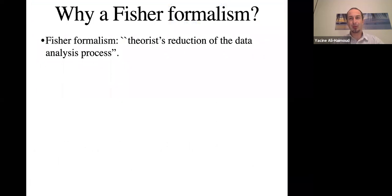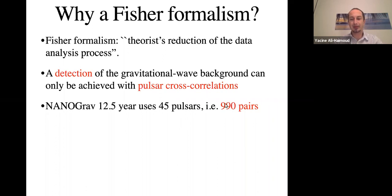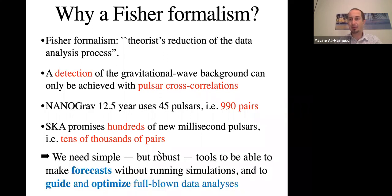So what is a Fisher formalism and why do we want to do this? Essentially a Fisher formalism is the theorist's reduction of the data analysis process. Why do we care about this? As you all know, to be able to claim a detection of the gravitational wave background, we need to use pulsar cross-correlations. With NANOGrav, there are already 45 pulsars being used corresponding to 990 pairs. The SKA promises to hunt down hundreds of new low noise millisecond pulsars out of which we will be able to construct PTAs with tens of thousands of pairs. You can see that this is quickly going to become computationally unmanageable. And so we need some simple and robust tools to be able to make some forecasts about what these instruments can or cannot see without necessarily running time-consuming Monte Carlo simulations. And we also need some simple tools to be able to guide and optimize full-blown data analysis. And that's the point of this Fisher formalism.